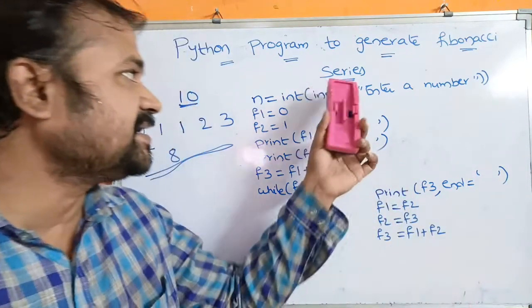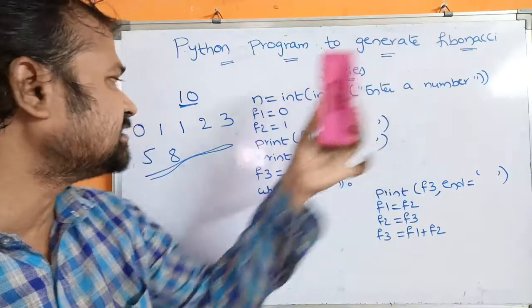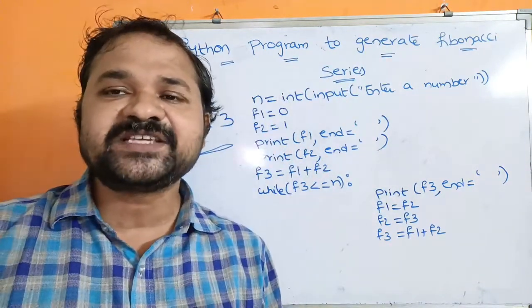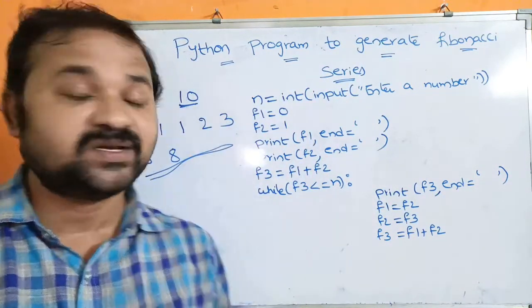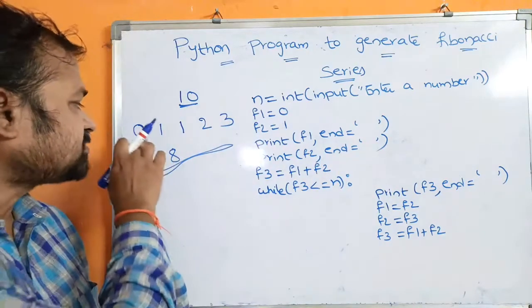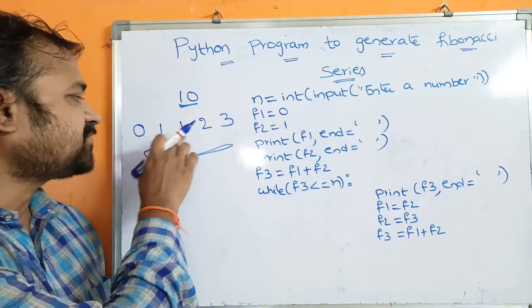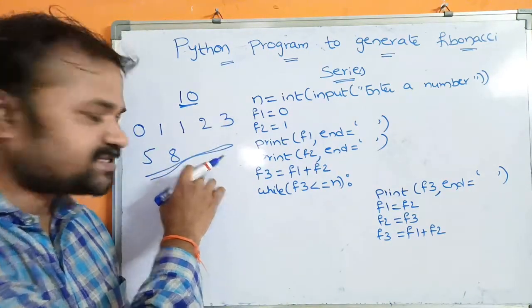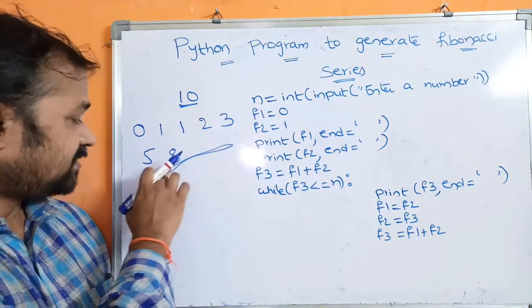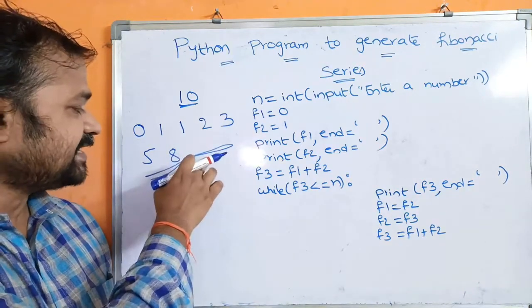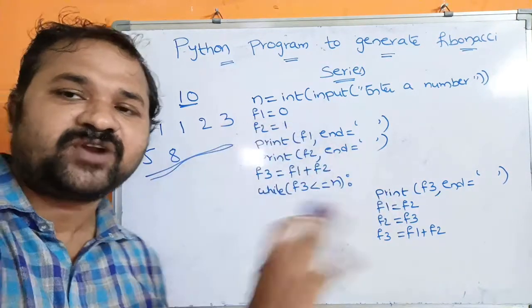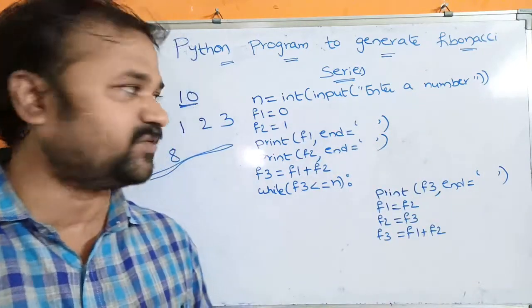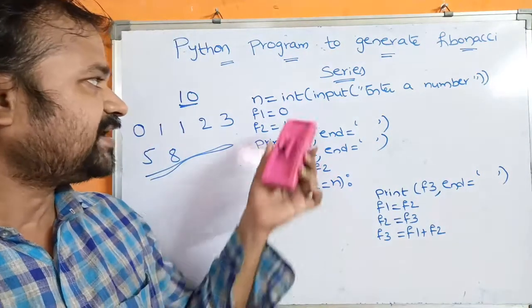Here we are displaying the Fibonacci series up to 10. If we want, we can display the first 10 numbers also. So the first 10 numbers would be 0, 1, 1, 2, 3, 5, 8, 13, 21, 34 and so on. We will see that program later in the next video. So let us see this program.